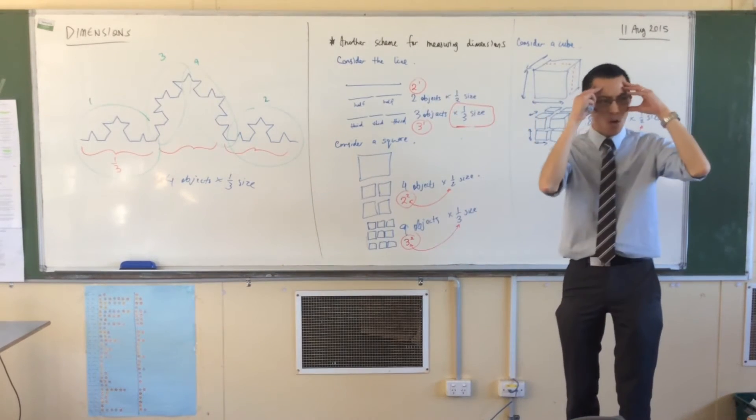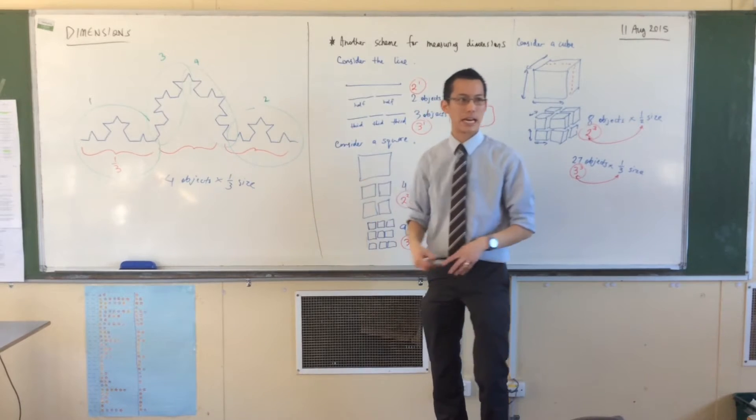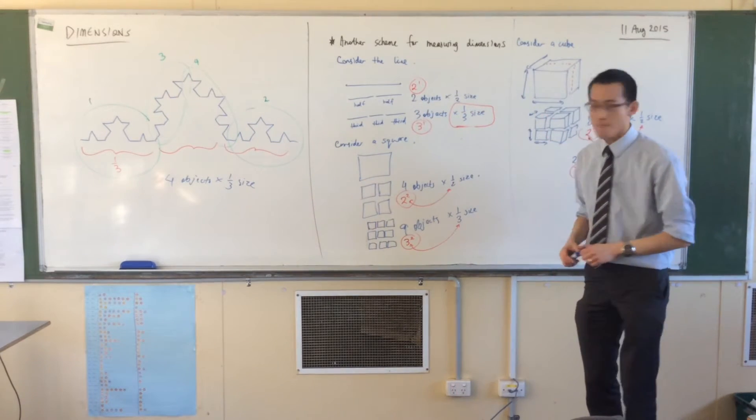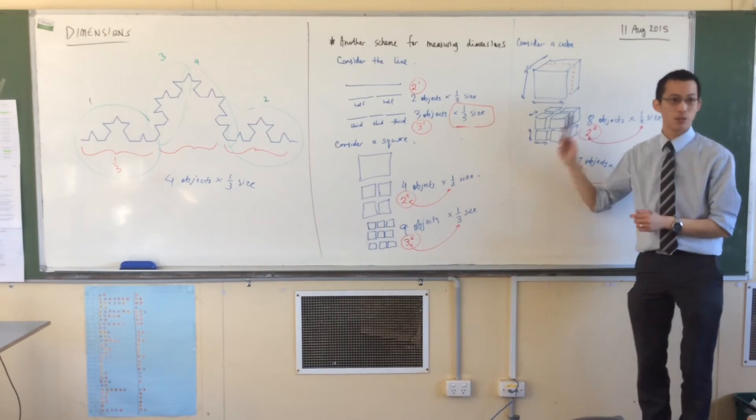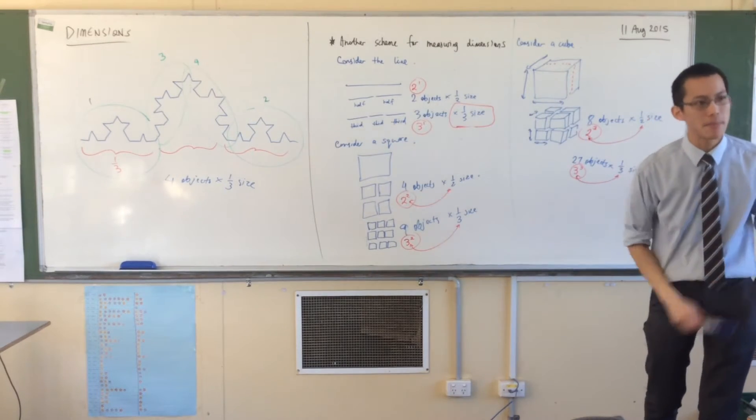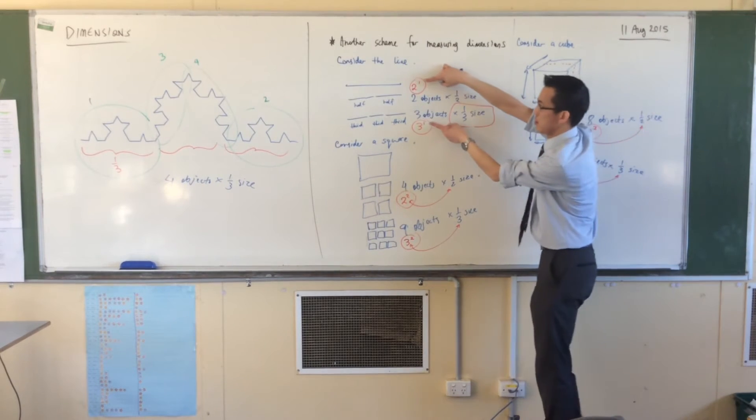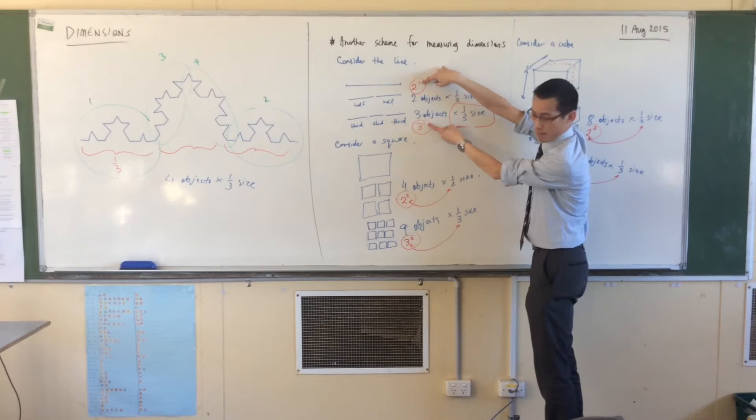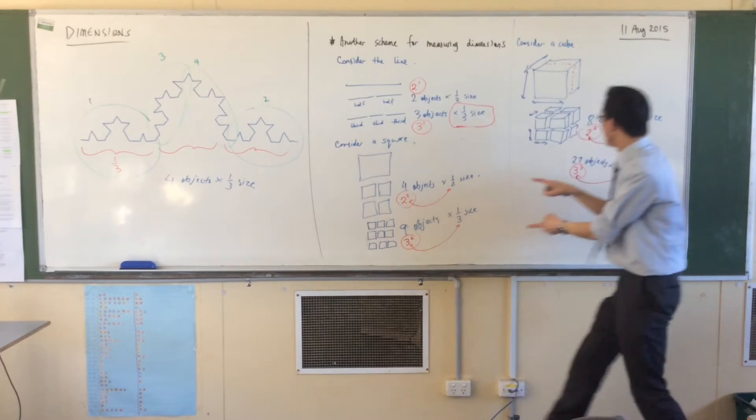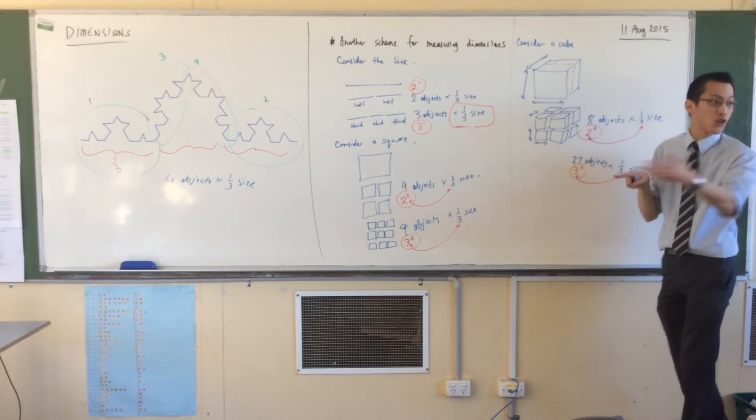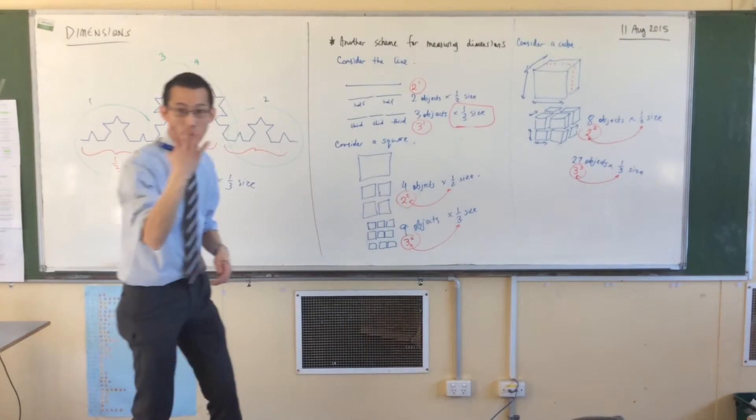So, where does the dimension come into this? How can I use this to calculate the dimension? Have a look at which number, in each time that we went through one-dimensional, two-dimensional, three-dimensional, have a look at where the dimension appeared. With the line, the dimension appeared here. You see that? It's that power. One. Then it appeared here. Two. Then it appeared here. Three. And then you told me, if we had a four-dimensional thing, they call it a hypercube, by the way, it would be four. It would be three to the power of something.